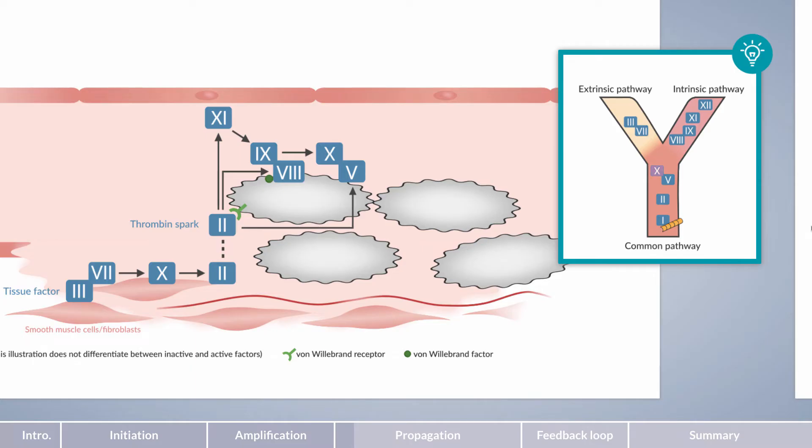Factor X can be activated by two different complexes, either by factors III and VII, or by factors IX and VIII. These complexes are termed tenases, which stems from ten, for the substrate factor they activate, and the suffix -ase, which is generally used for enzymes. In reference to the pathways of the cascade model, they are also termed extrinsic and intrinsic tenases.